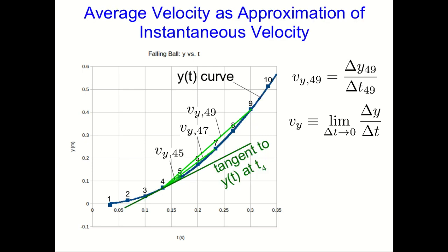Now we can imagine that there is a curve that goes through all our data. The ball, after all, was actually at various locations in between our data points. We just haven't been able to measure them. And so there should be a curve something like this.